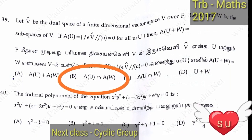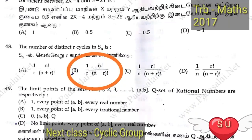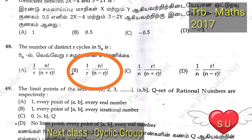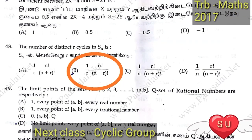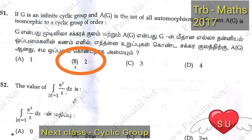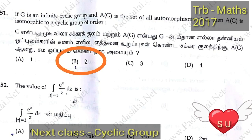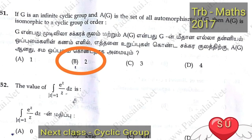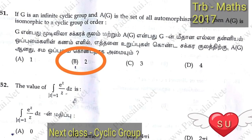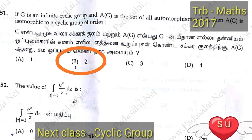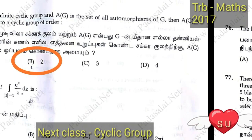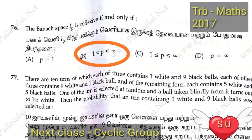Then the intersection of the annihilators is the answer — option B. Next: the number of elements of order r in the cyclic group Sn is one divided by r times n factorial divided by n minus r factorial. Next: if G is an infinite cyclic group and A(G) is the set of automorphisms of G, then A(G) is isomorphic to a cyclic group of order two.